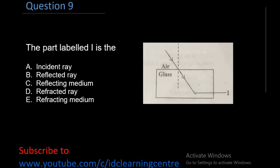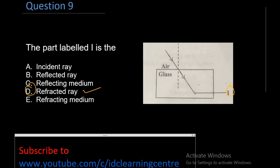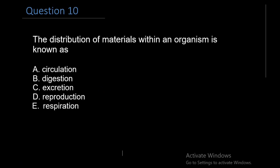Question 9: The part in the diagram labeled I, since this is refraction, so I is definitely D, which is the refracted ray. Question 10: The distribution of materials within an organism is known as A. Circulation, B. Digestion, C. Excretion, D. Reproduction, E. Respiration. The right answer is circulation. So circulation is like moving things around.